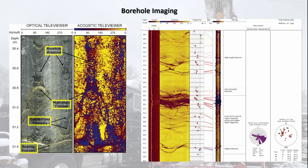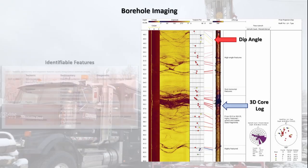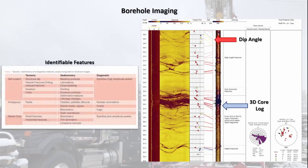Transit time data from these logs can also produce high resolution caliper logs. The images produced by these instruments can be used to visually identify fractures, fossils, bedding planes, cross-lamination, and strike and dip by means of manual methods or using computer programs to aid in interpretation. Due to modern advancements in camera technology, this high resolution data can be faster, more cost efficient, and more accurate at identifying lithology and formation fluid characteristics than standard wireline logging instruments.